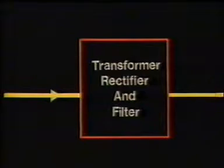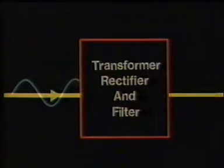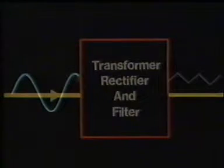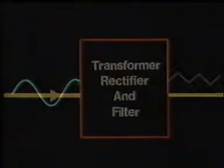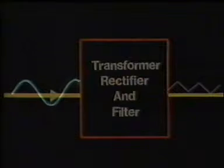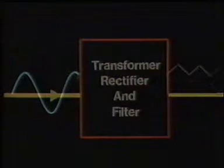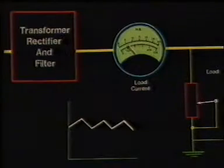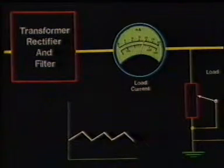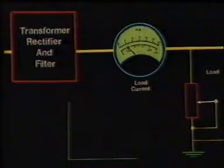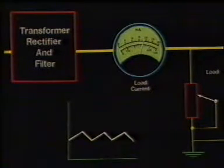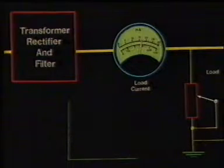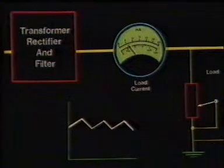In a power supply consisting of a transformer, rectifier, and filter only, variation in the mains voltage will vary the DC output level, which is not desirable. Similarly, the output DC voltage changes if the load current changes, which is also not desirable.